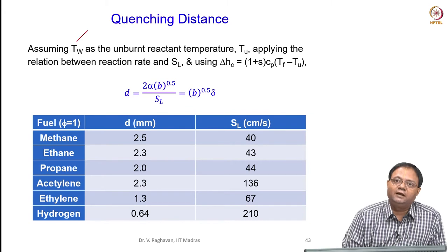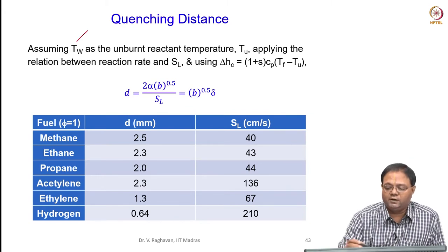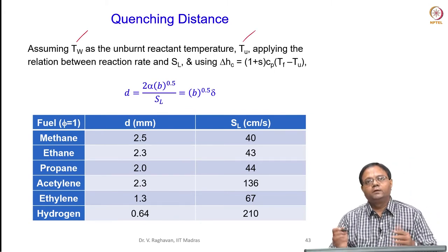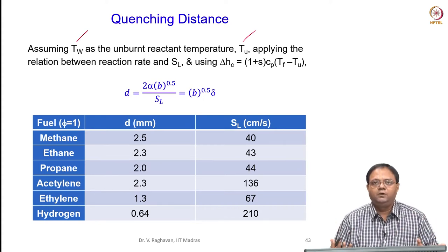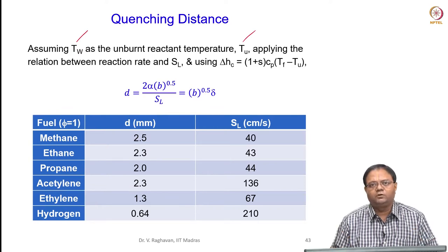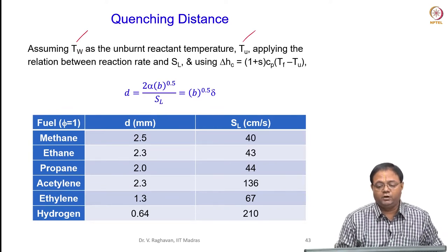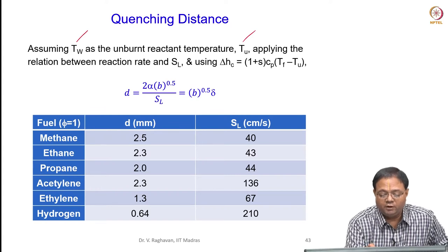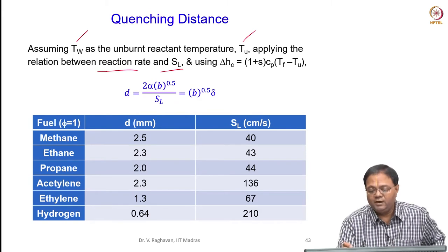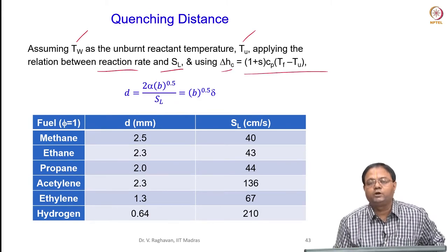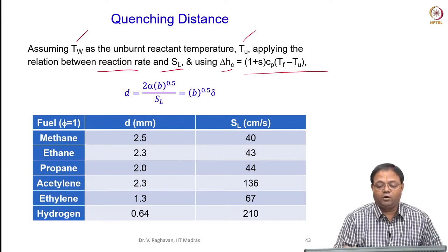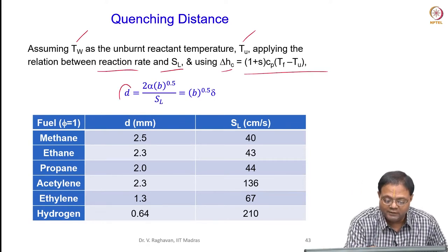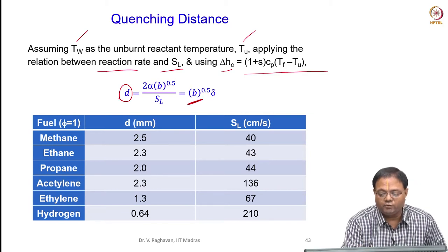One more assumption: the wall temperature Tw is maintained at the unburnt ambient temperature, so Tw = Tu. Then we can use the reaction rate and SL to eliminate the reaction rate, and ΔHc can be eliminated by putting (1 + S) times Cp times (Tf minus Tu). The Tu terms cancel, and we get D equal to B^0.5 times δ.